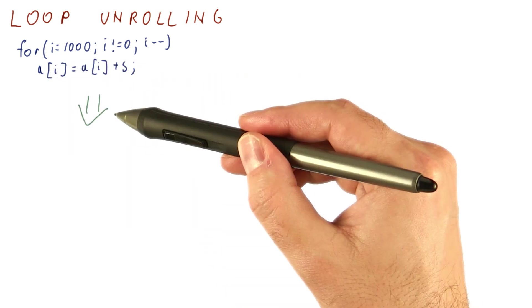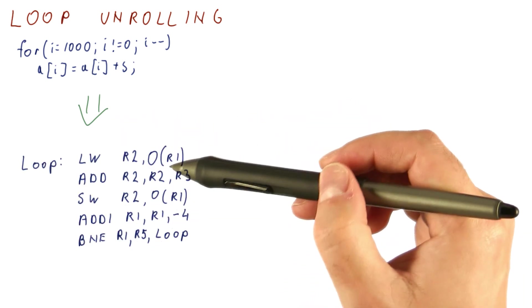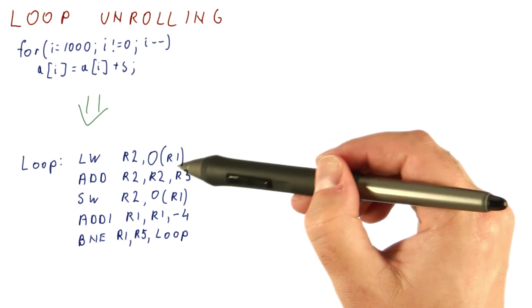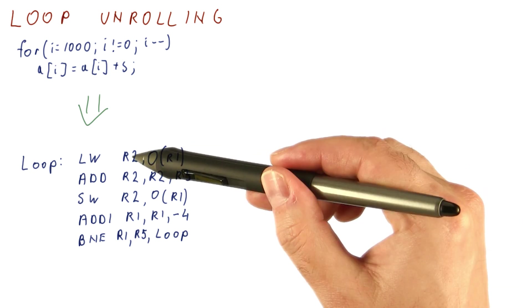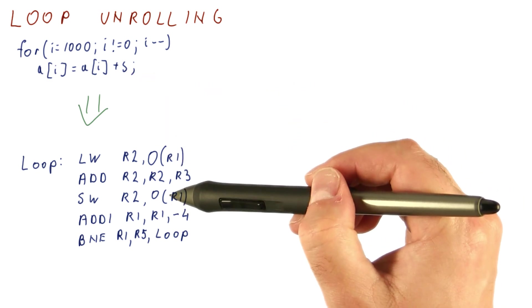When we translate this into instructions, we get a loop like the one we have already seen. We load from the array element, so r1 is now the pointer to the ith element of the array. We load that, we add r3, that would be rs, to that.